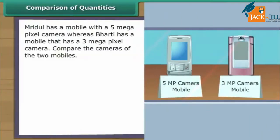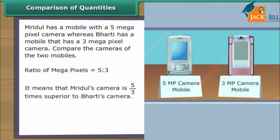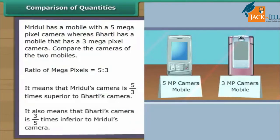Ratio. Mridul has a mobile with a 5 megapixel camera, whereas Bharti has a mobile that has a 3 megapixel camera. The ratio of the megapixels is 5 is to 3. It means that Mridul's camera is 5/3 times superior to Bharti's camera. It also means that Bharti's camera is 3/5 times inferior to Mridul's camera.